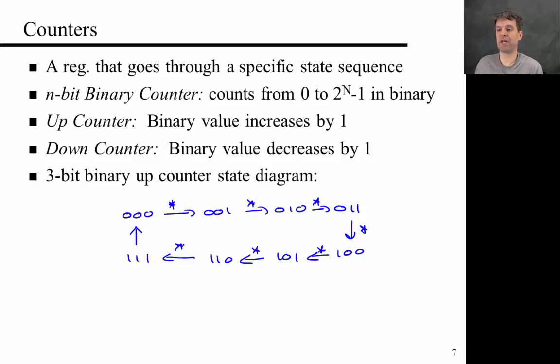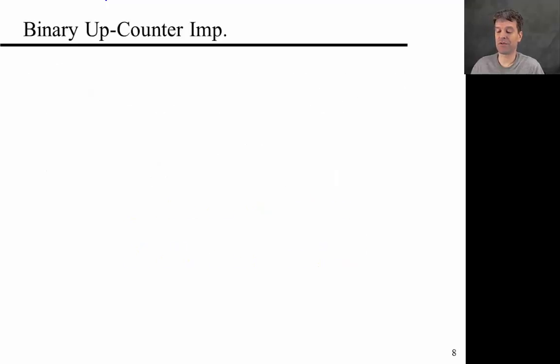Our next goal is to essentially design the combinational circuit that realizes this state machine. One way to go about this is to just write down the state table. We have present state 2, present state 1, present state 0, next state 2, next state 1, next state 0. If you're in state 000, we're going to go to state 001.